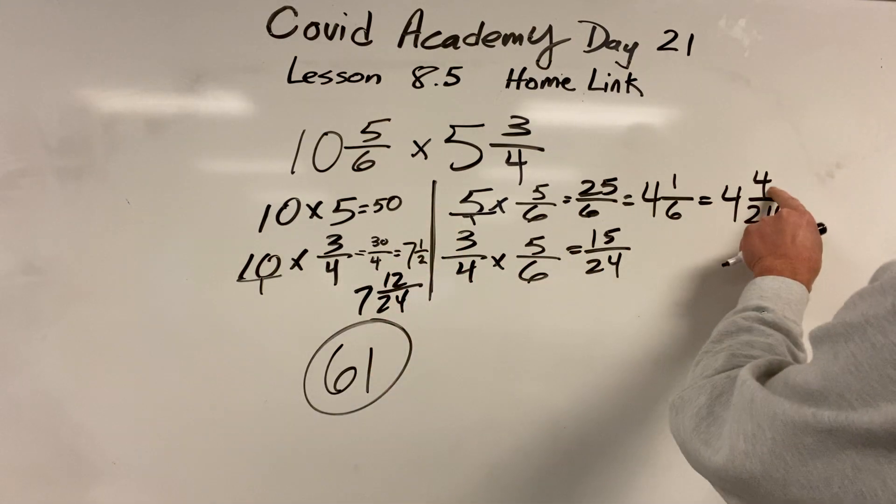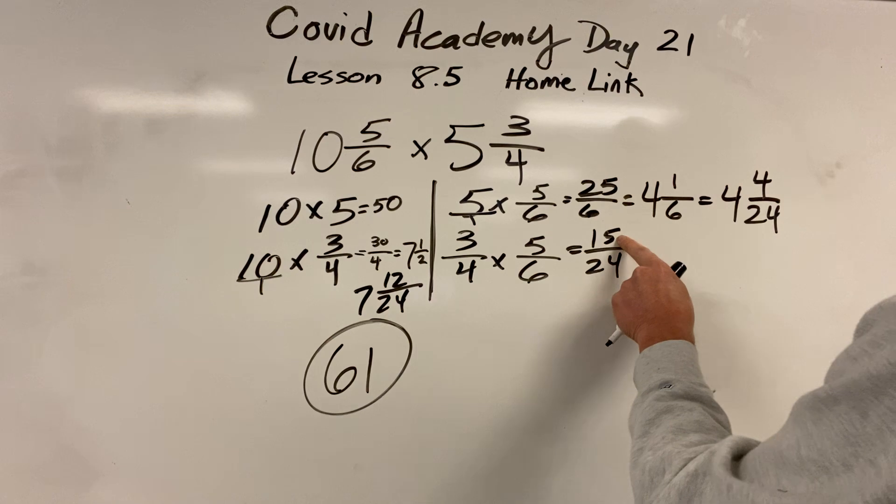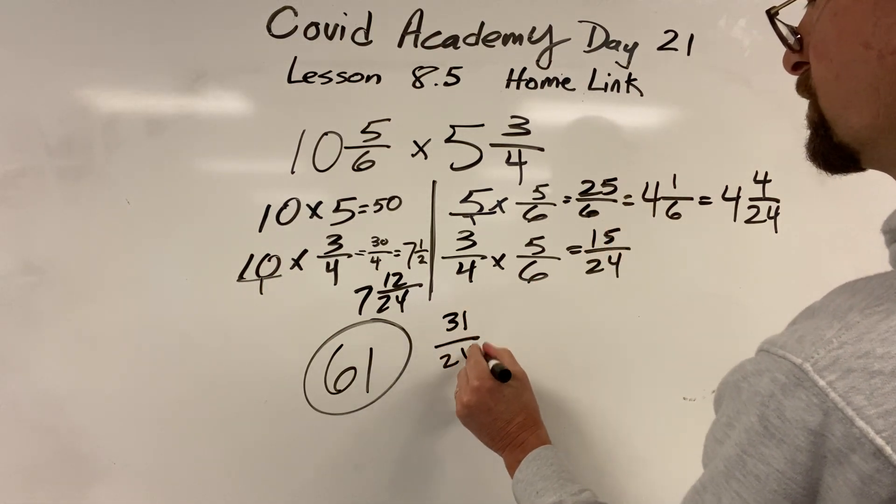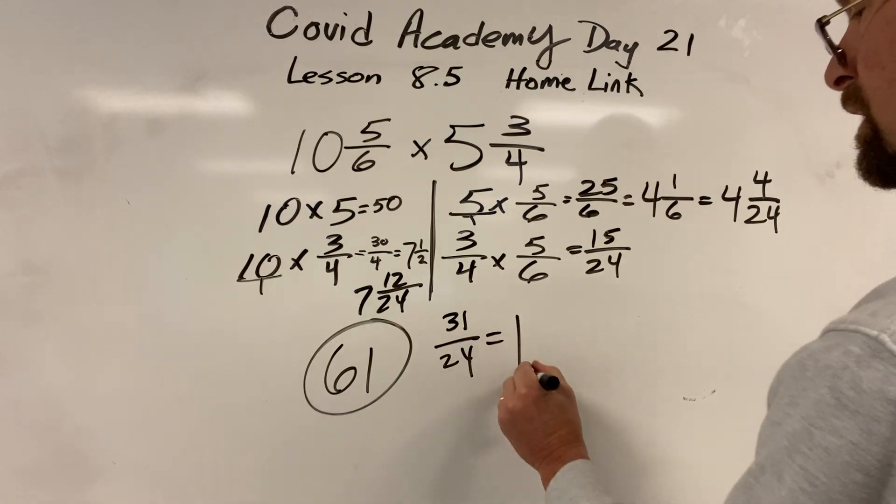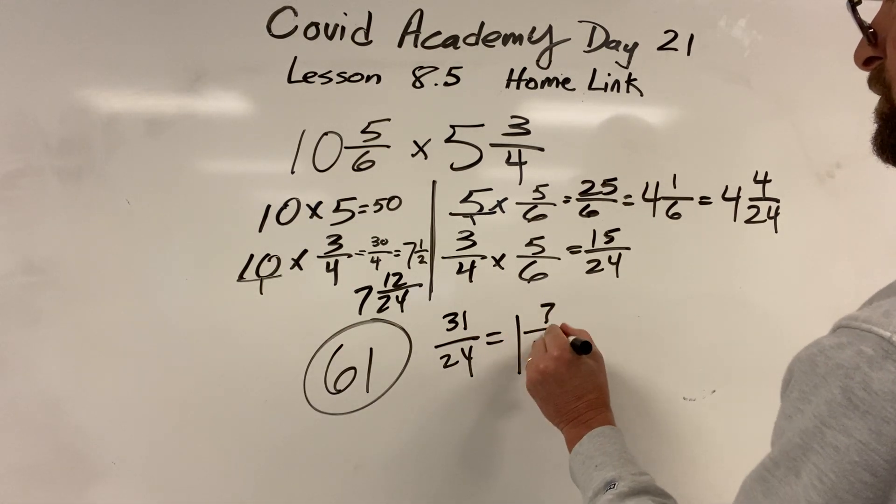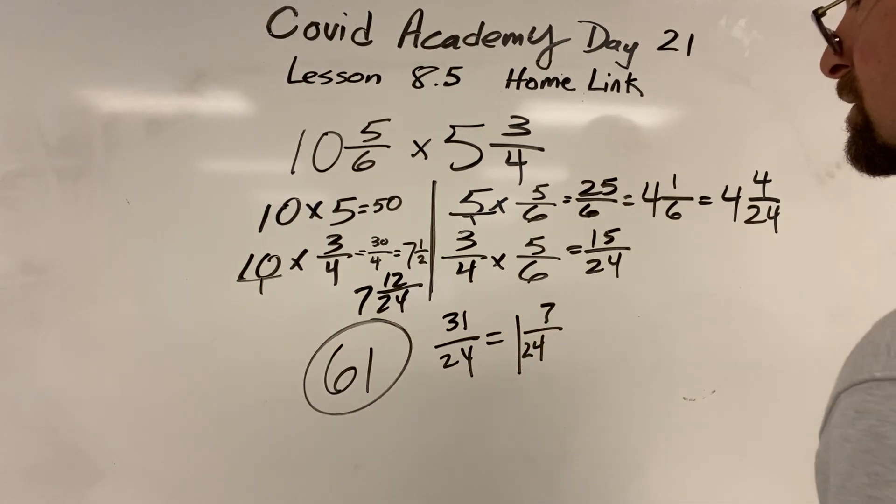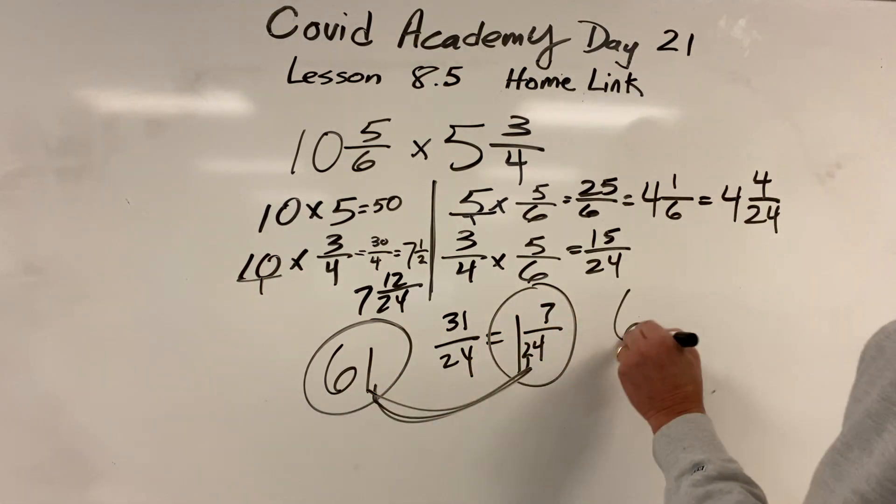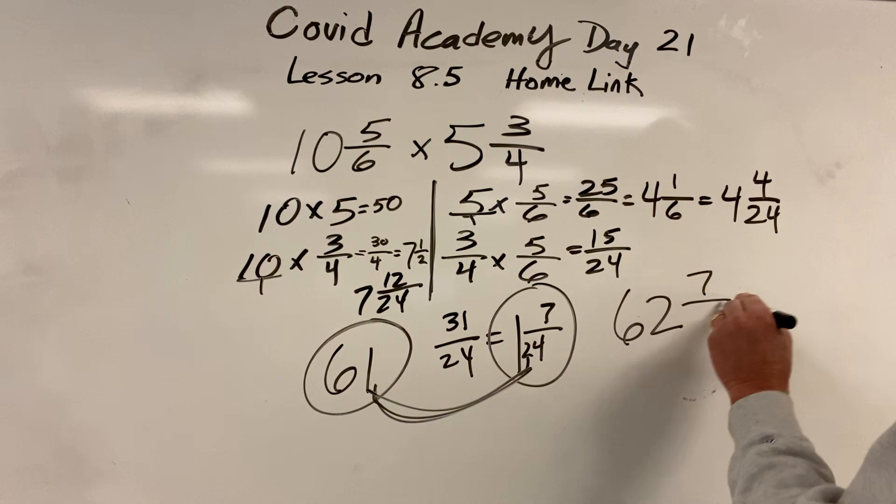Twelve of them, four more of them, is sixteen of them. Sixteen plus fifteen is thirty-one twenty-fourths, which is one and seven twenty-fourths. Put those two things together, and you get sixty-two and seven twenty-fourths.